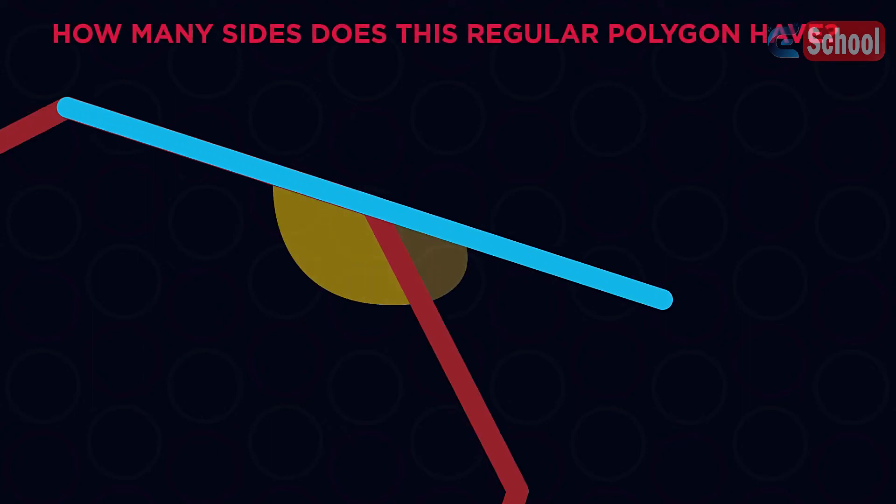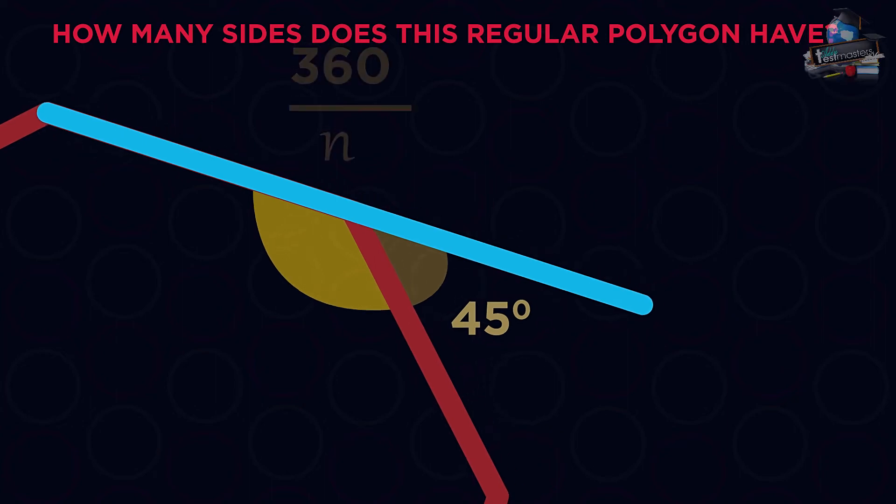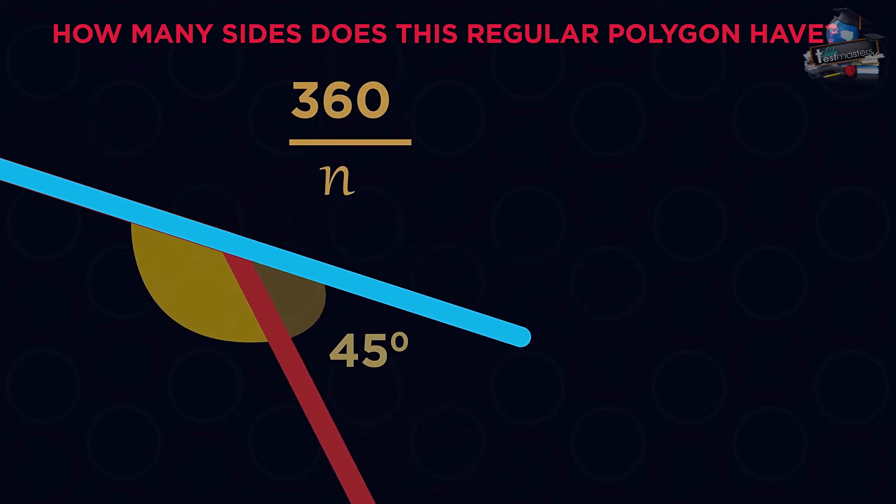We can use it to work out how many sides a regular polygon has. We're given the exterior angle of 45 degrees. As the exterior angles always add up to 360, we know that 360 divided by the number of angles will equal the exterior angle.